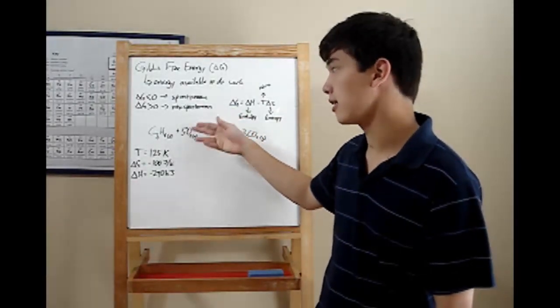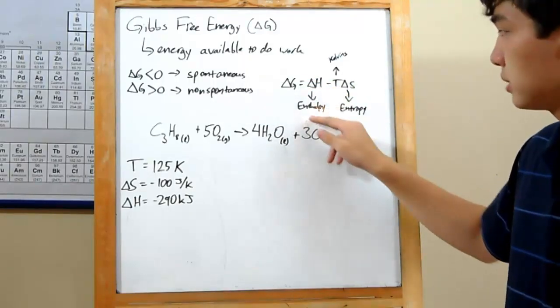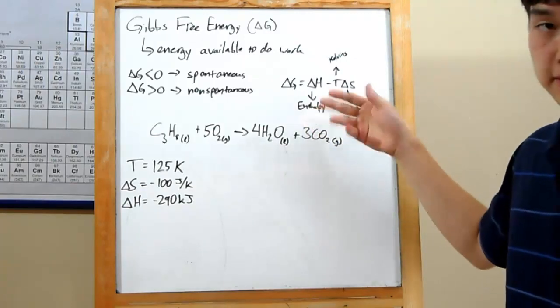In order to figure out if it's greater or less than zero, there's a calculation you can run through. Delta G equals delta H, which is your enthalpy, basically your heat,